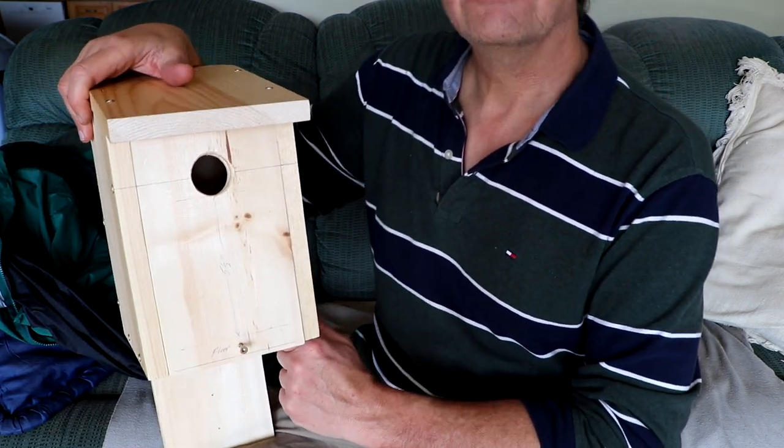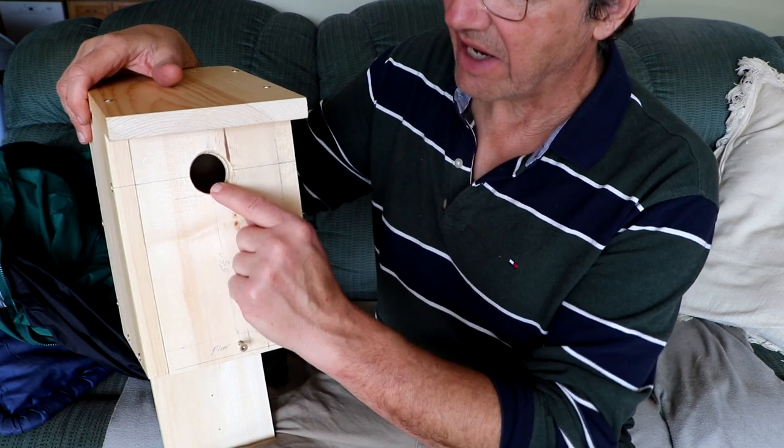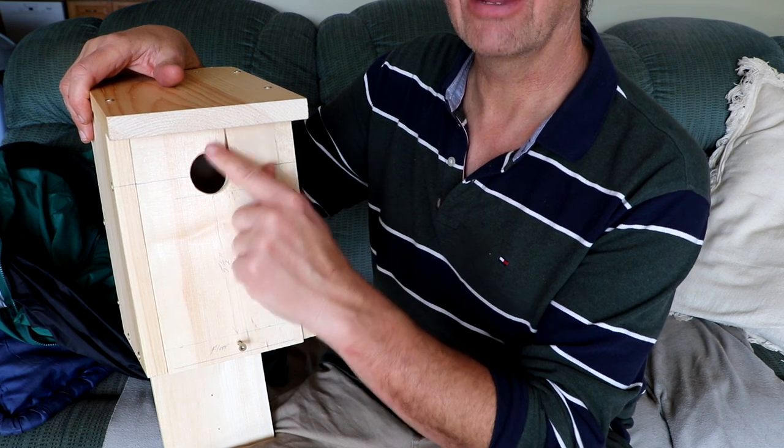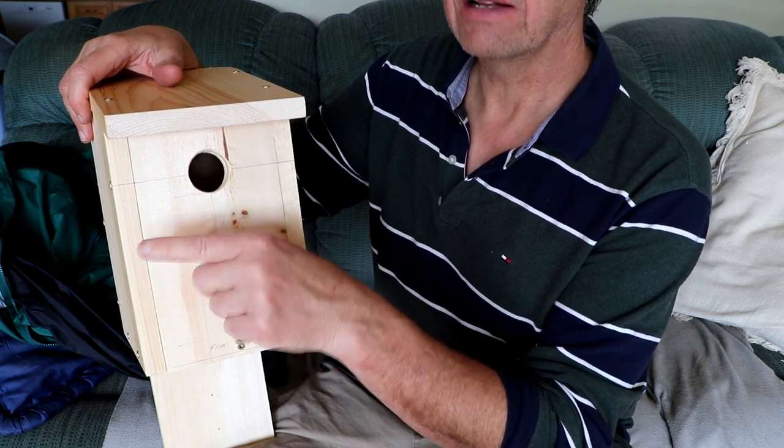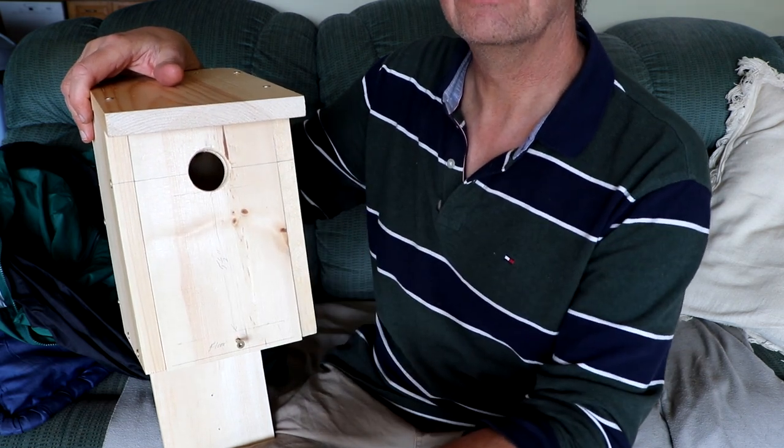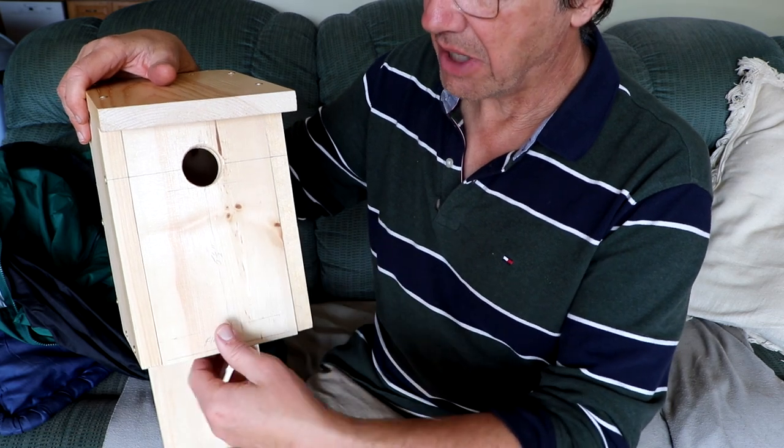A standard dimension for all tree swallow bluebird boxes is the size of the entrance hole. This should be an inch and a half in diameter. Anything less and it'll be too small, and anything bigger will probably allow things like starlings or other birds that you may or may not want into the box.